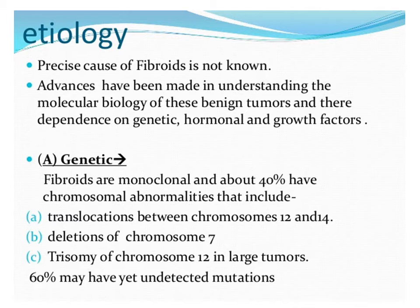The exact cause of the development of fibroids is not known, but it has been said that they are dependent on three factors: genetic, hormonal, and growth factors. They are common in some families — if the mother has fibroids, the daughters and sisters can have them as well. The genetic part is also based on chromosomal problems.